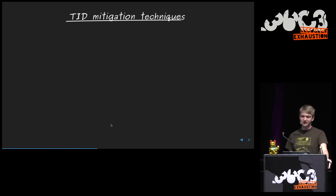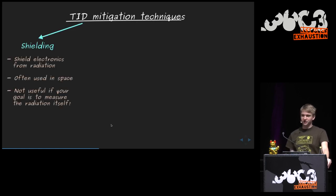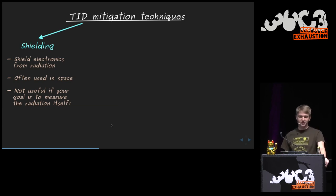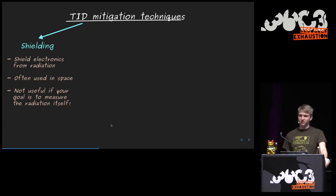To mitigate TID effects, the first option is shielding — putting a box around your electronics to prevent radiation from reaching the transistors. This is common in space applications like satellites, but it's not useful when you actually want to measure the radiation, as in particle accelerators. There you need your detectors exposed to the radiation, and you also don't want shielding material interfering with the tracks of secondary collision products.